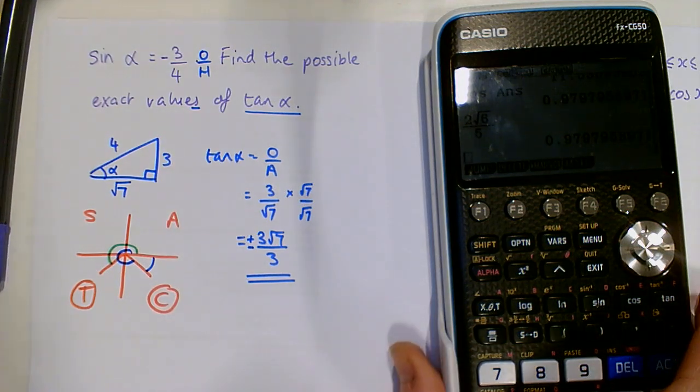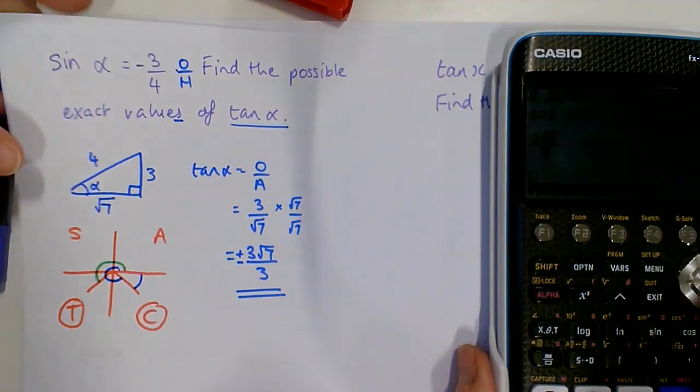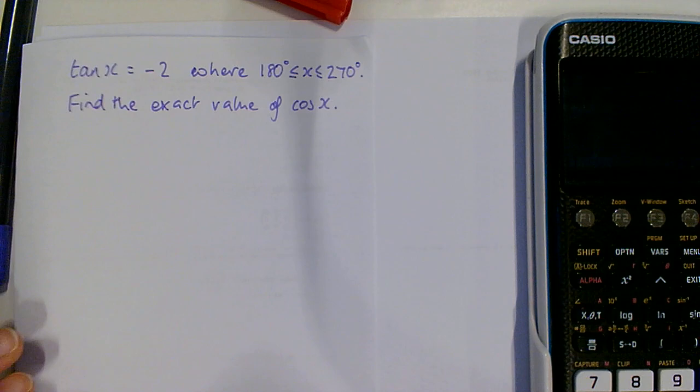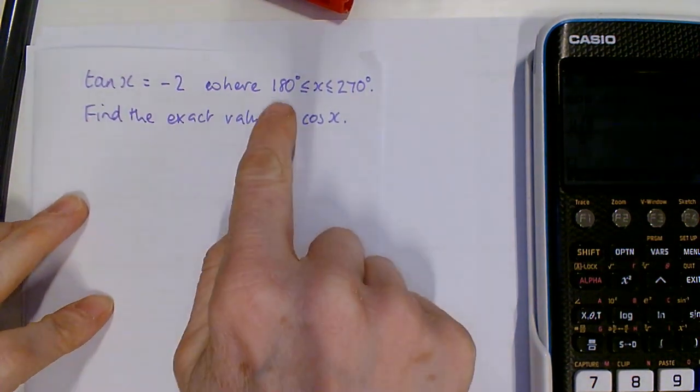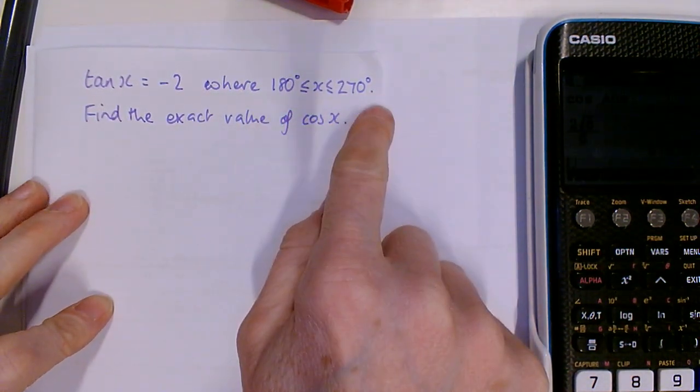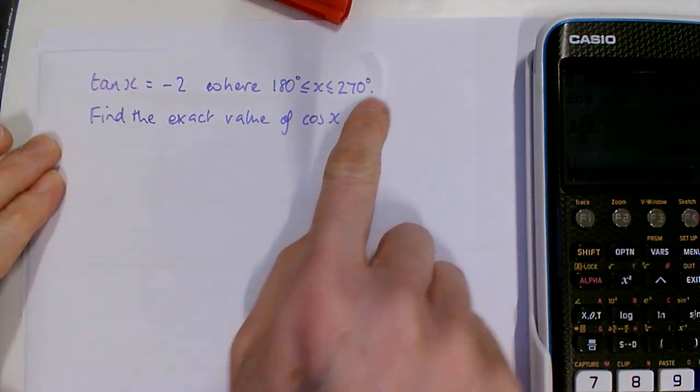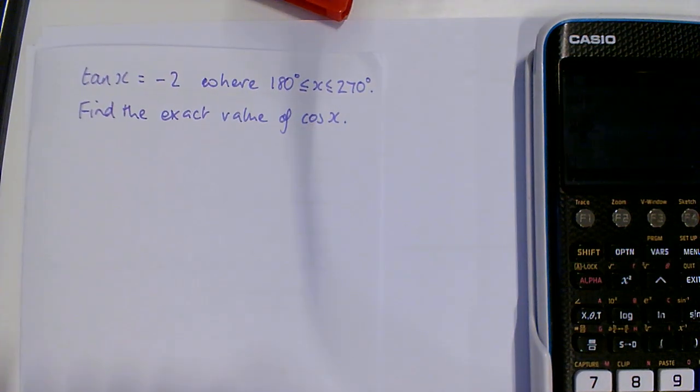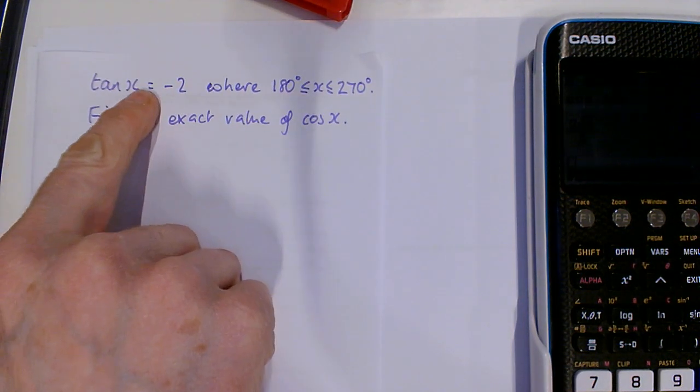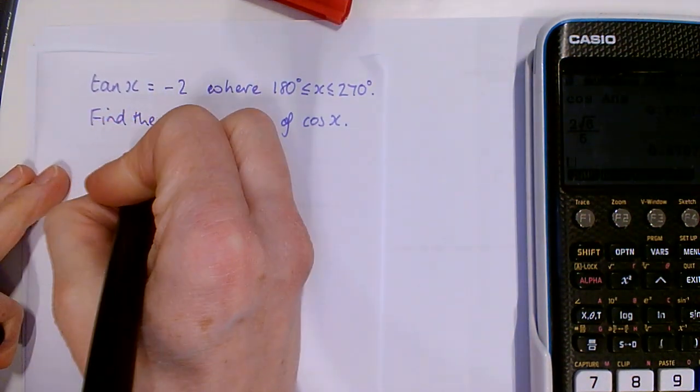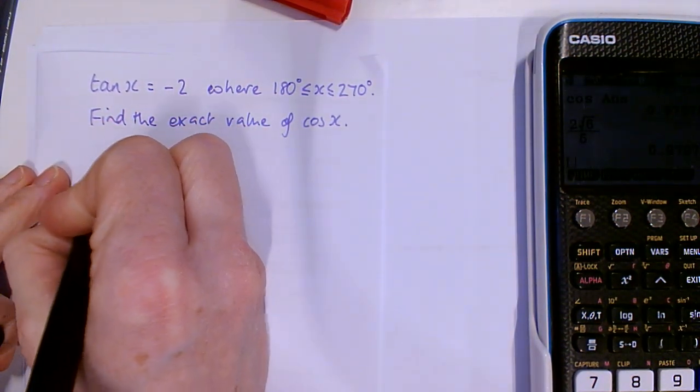One final example then. So we have got tan is negative 2. And we know exactly which region of values we want to pick our angle to be in. And we need the exact value, of course. So we start again the same with tan. And we draw ourselves a nice right angle triangle.